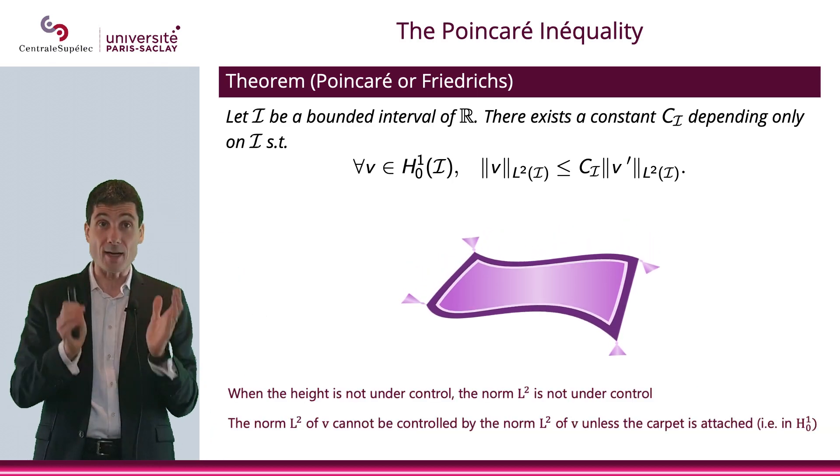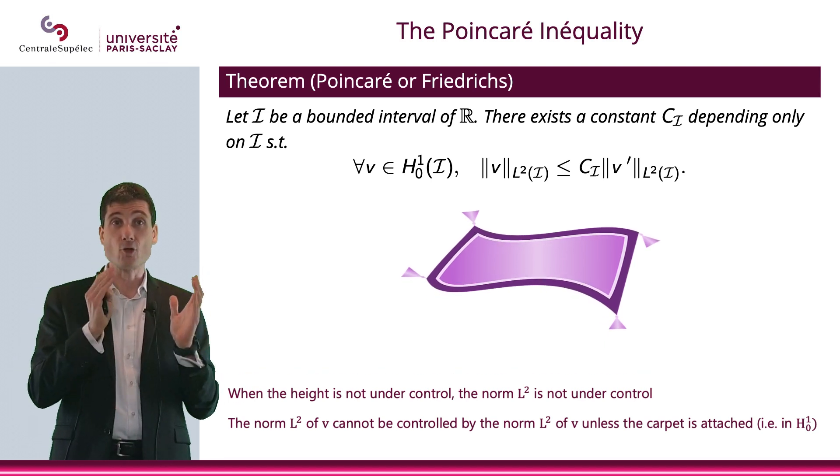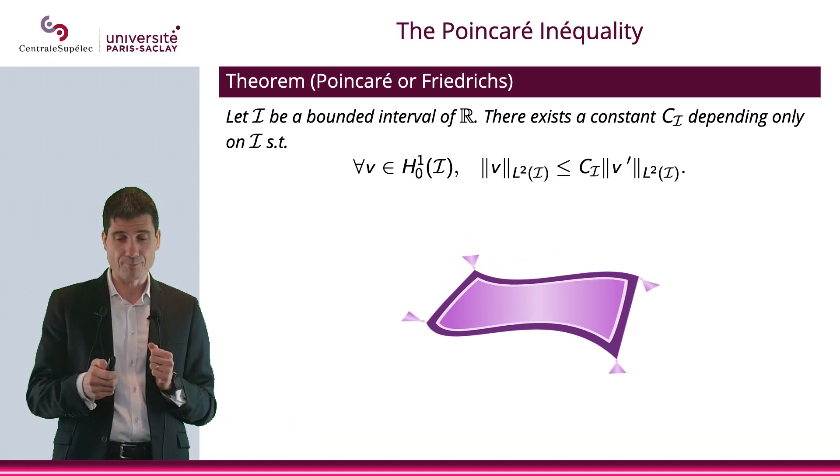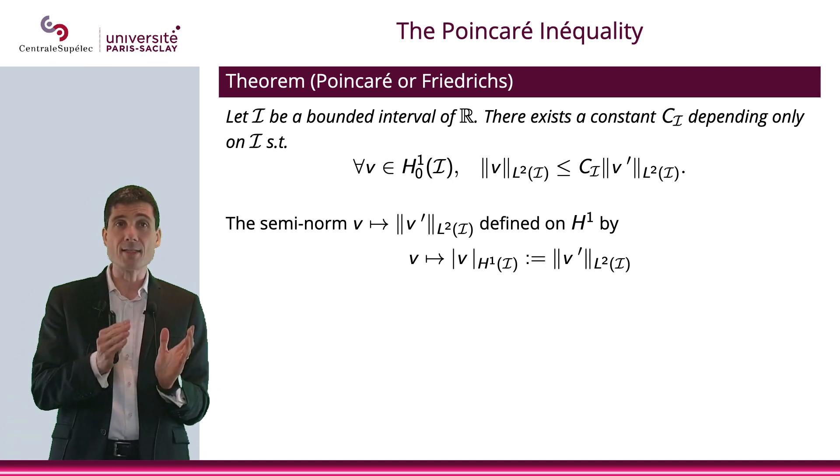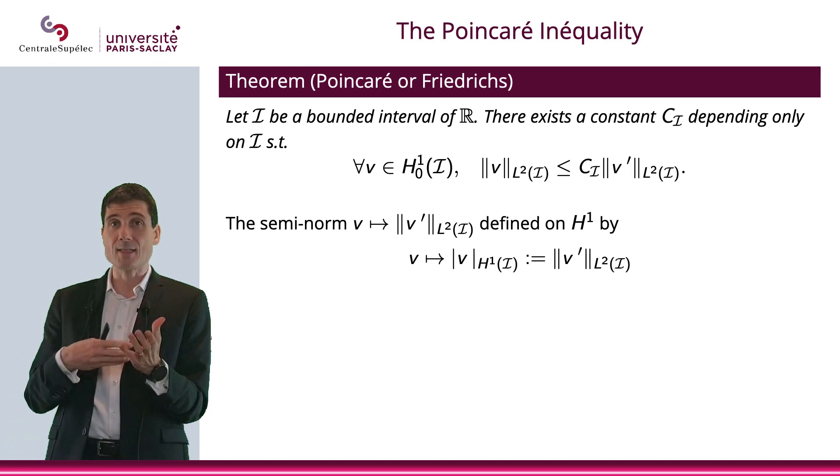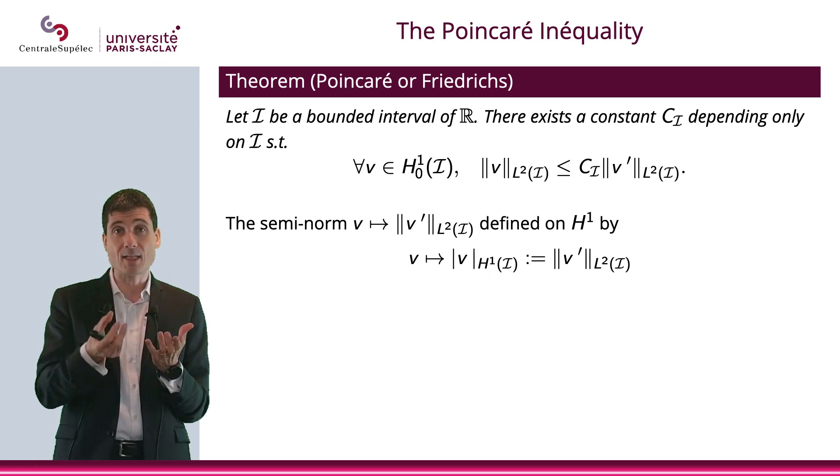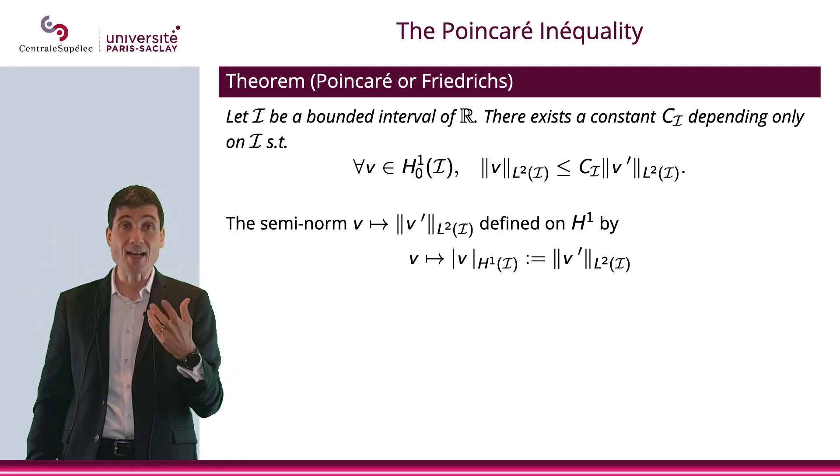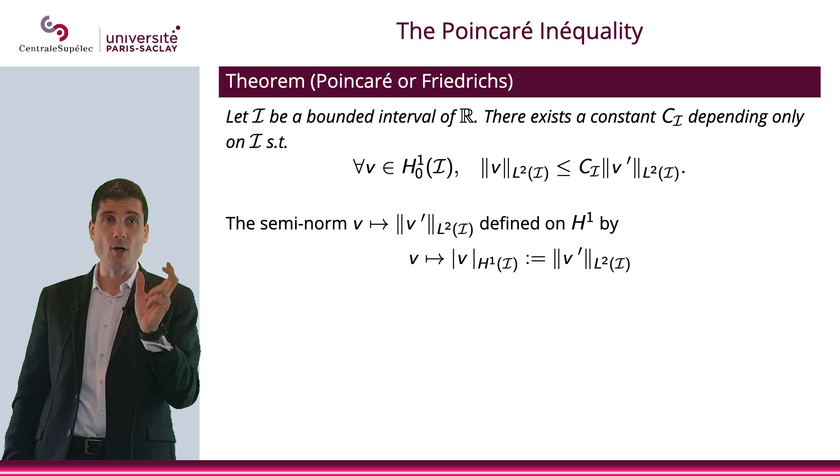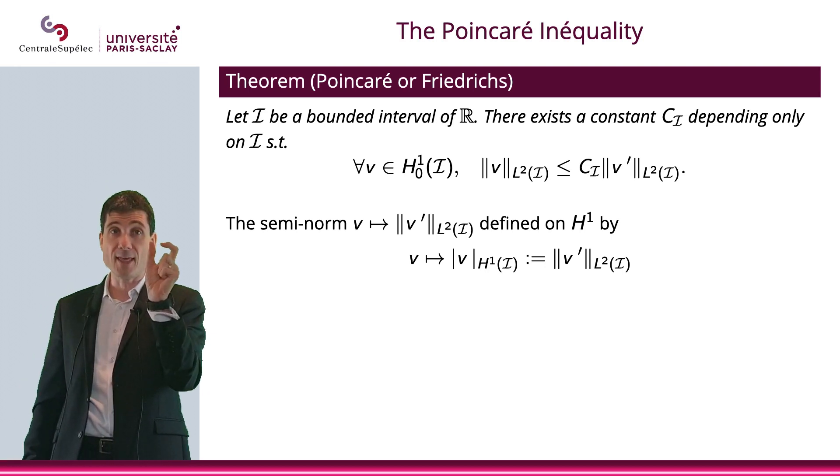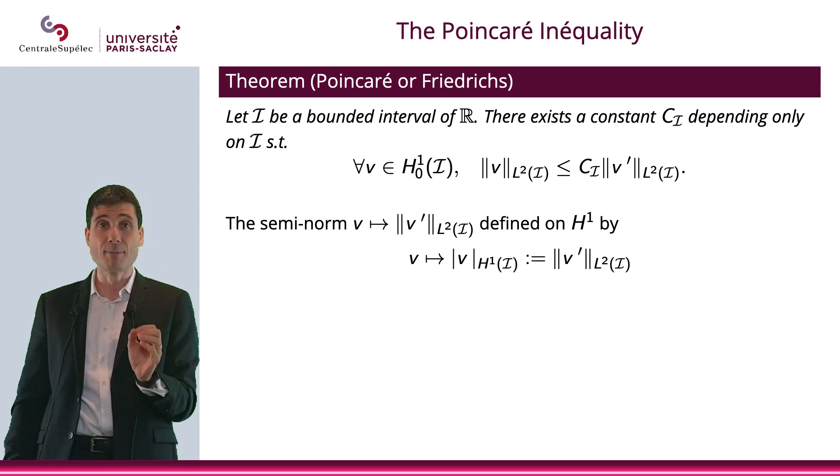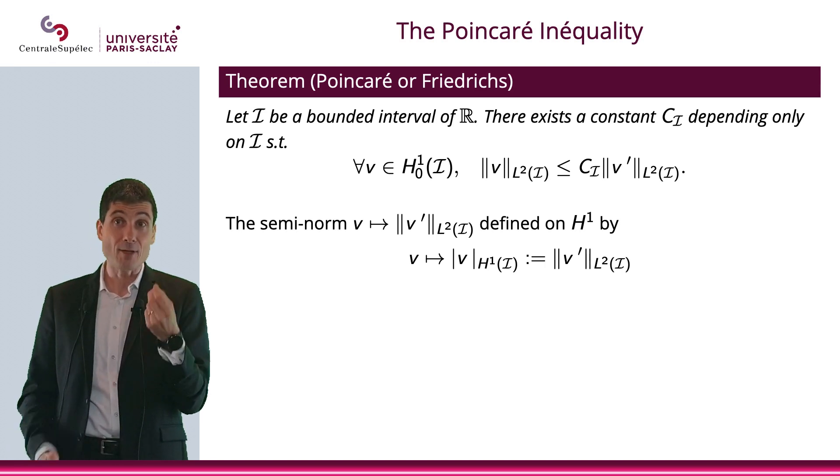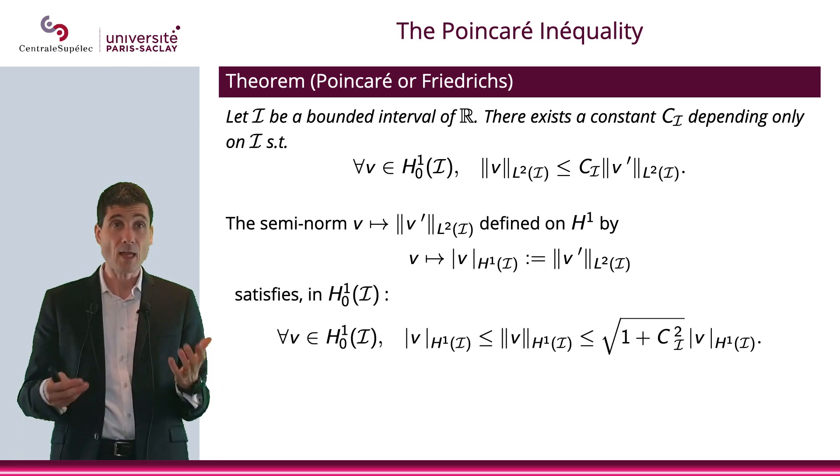But if you're in H^1_0, what Poincaré's inequality says is that the norm L^2 of V will be bounded by a constant times the norm L^2 of V prime. And there is a nice consequence for this, which is that what is normally a semi-norm, meaning it's not a norm, you can't guarantee that if the semi-norm of V is equal to 0, that doesn't really imply V is equal to 0, then that semi-norm will be a norm in H^1_0. The semi-norm that I'm considering here is the L^2 norm of V prime. That, obviously, for the reasons I just explained, that would not be a norm on H^1. But what's going to happen is it's going to be a norm in H^1_0. And indeed,